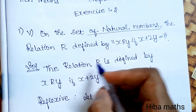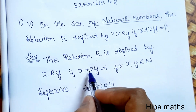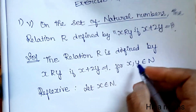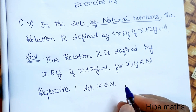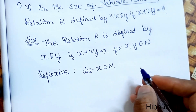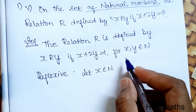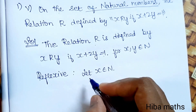In the solution, the relation is x plus 2y is equal to 1, for x and y as elements of natural numbers. First, we check reflexivity.